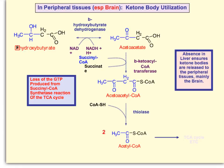The enzyme beta-ketoacyl-CoA transferase is key in this reaction and is not present in the liver. You also have to recognize that succinyl-CoA is used and succinate is formed. Succinyl-CoA is used to produce the acetoacetyl-CoA, and by using it up, you lose the equivalent of a GTP, since GTP is normally produced from succinyl-CoA in the TCA cycle.